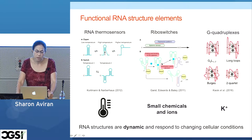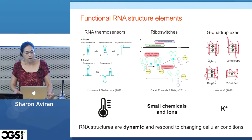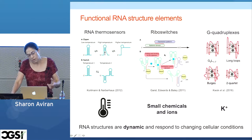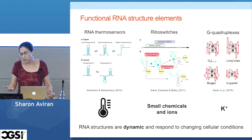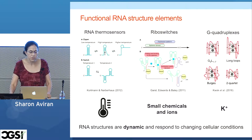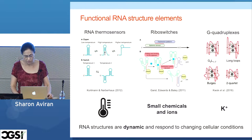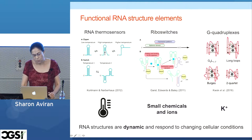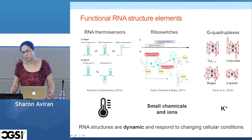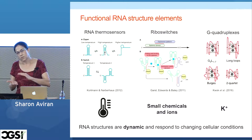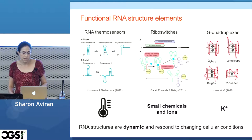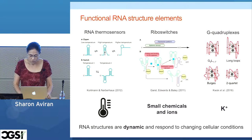Riboswitches are also common regulatory elements in bacteria. They are known to change their structure in the presence of certain ligands, such as metabolites or ions, and when they do so they trigger downstream changes that impact gene expression. The third group is G-quadruplexes — very special and super stable structures made of stacks of G-quartets, which have been implicated in neurological diseases and in cancer.